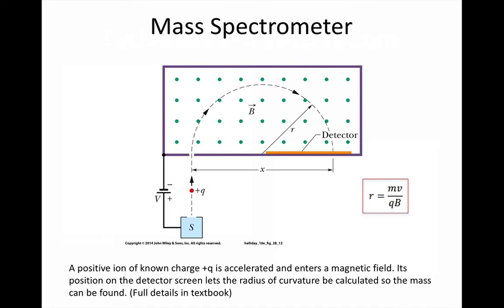Another technology that uses these equations is the mass spectrometer. There, an ion with a known charge is fired into a chamber with a magnetic field. Ions with different masses will have different radii of curvature, and so they end up at different positions on the detector.